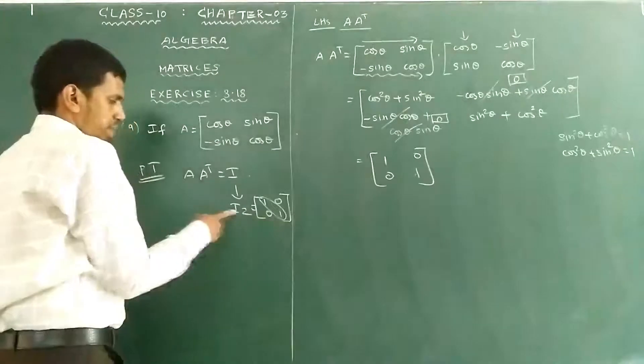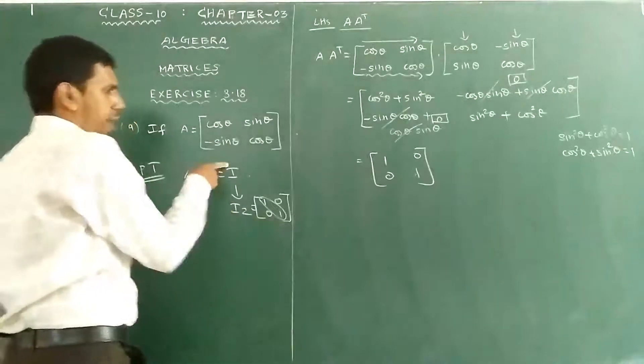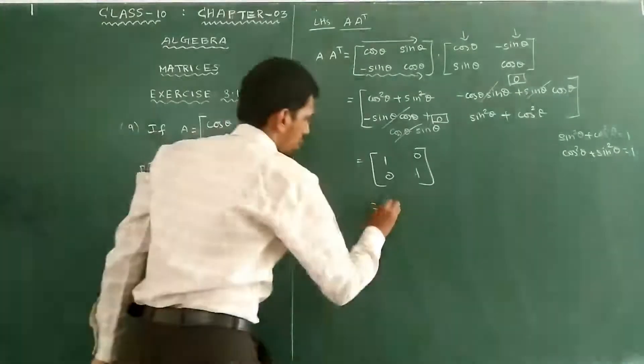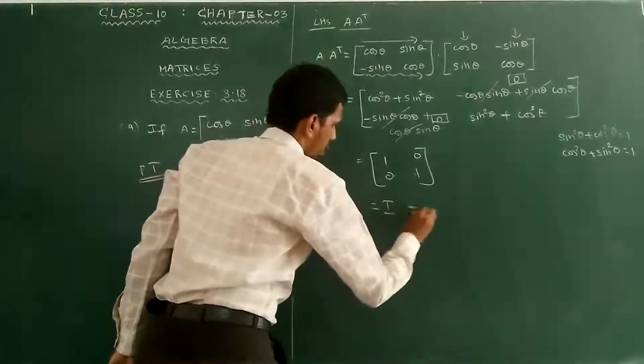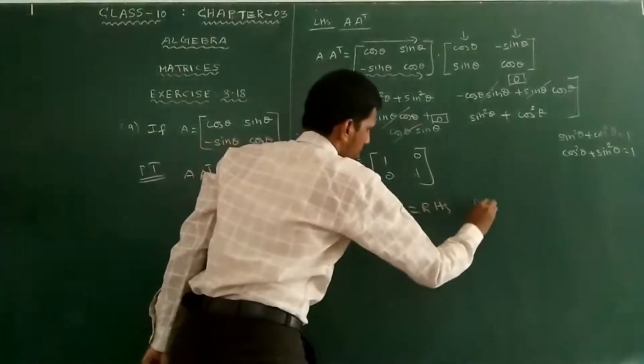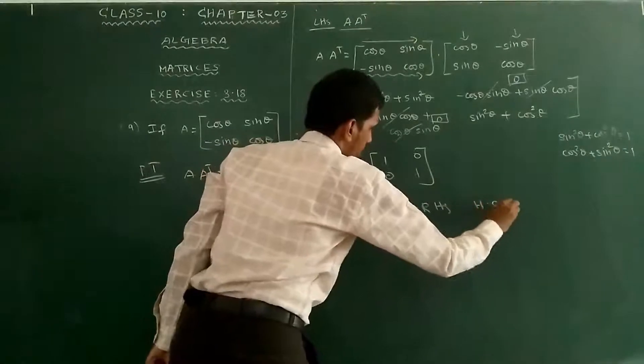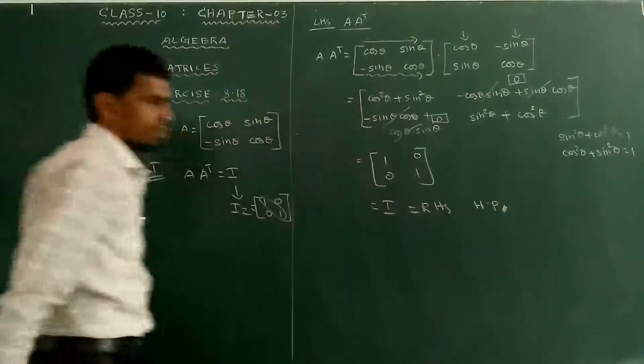Therefore, A into A transpose equals I, which equals the right hand side. Hence the result is proved.